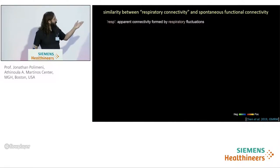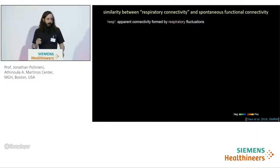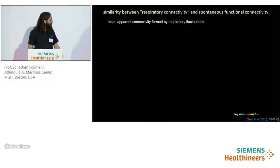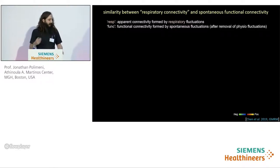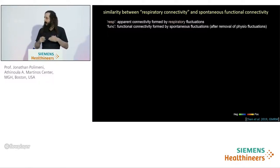To test for the similarity between physiological networks and conventional resting state networks, we compared respiratory connectivity to spontaneous functional connectivity by generating two BOLD datasets. The first was a synthesized dataset containing only respiratory-driven dynamics — by convolving group-averaged voxelized respiratory response functions with recorded respiratory waveforms from each HCP subject. The other consisted of resting state BOLD after careful removal of all physiological fluctuations, including those associated with slow respiratory and cardiac signals — our best estimate of BOLD data without any physiological noise, representing neuronal fluctuations.